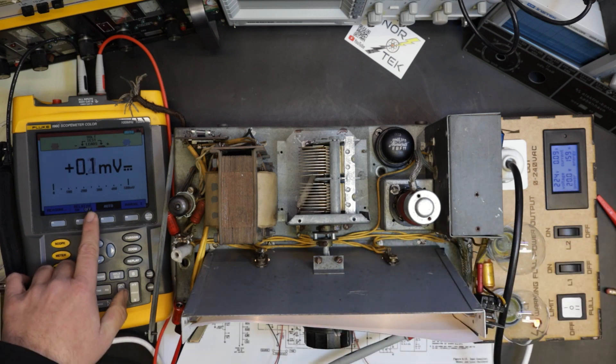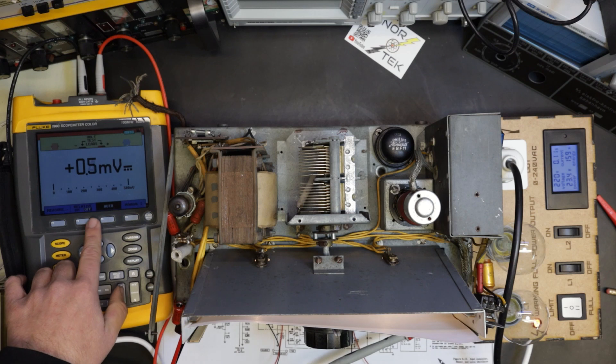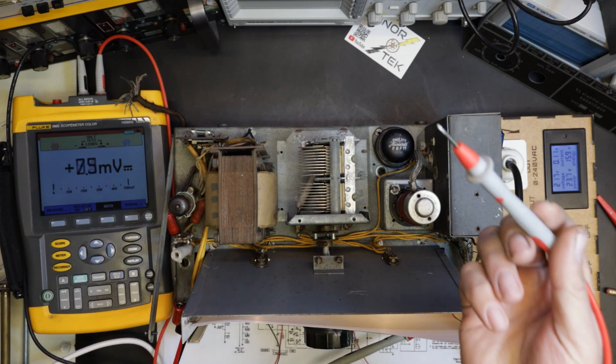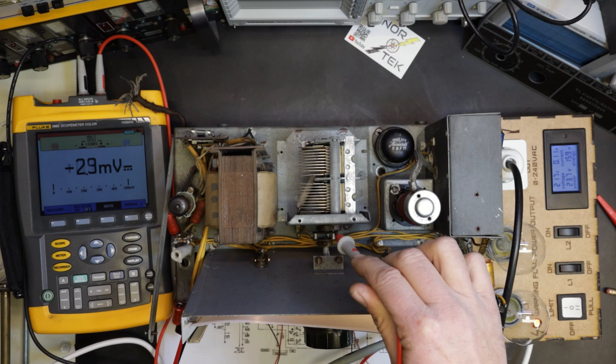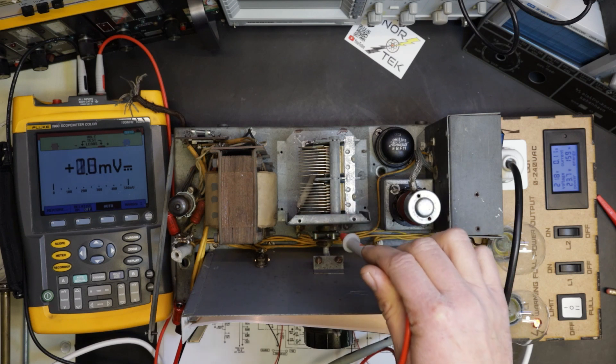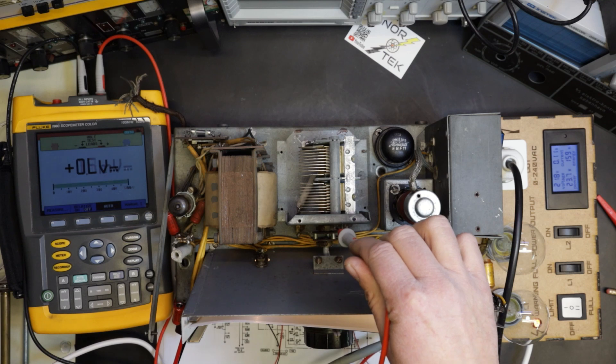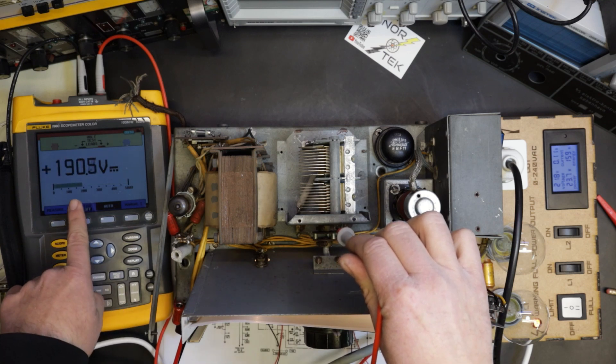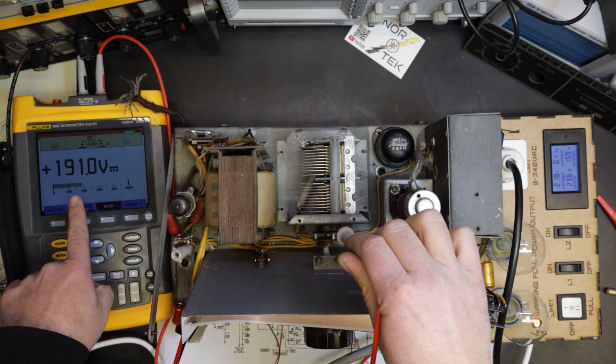You can see I'm measuring DC volts here, and I will touch my probe onto this nut here on the frequency adjustment. And there you see I got 191 volts DC.